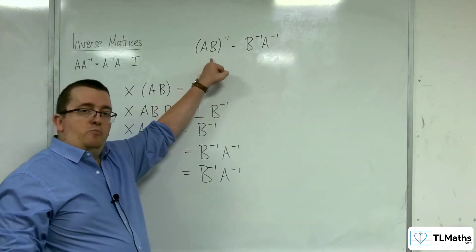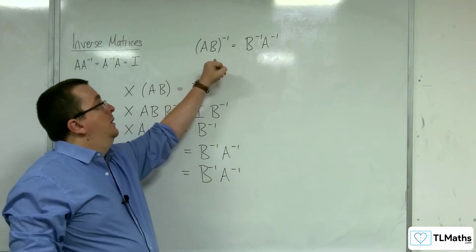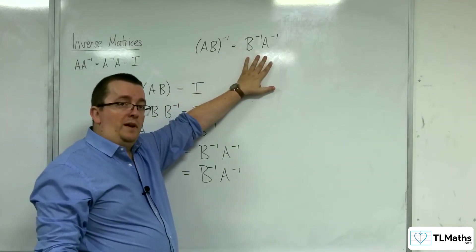And so the inverse of a product of matrices is actually this, B^(-1), A^(-1).